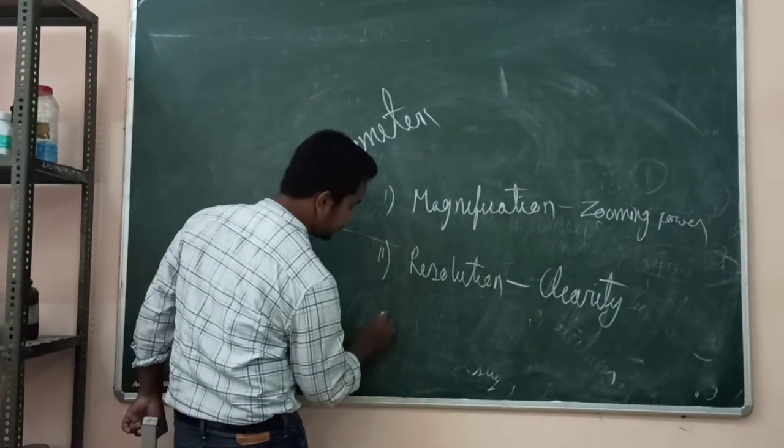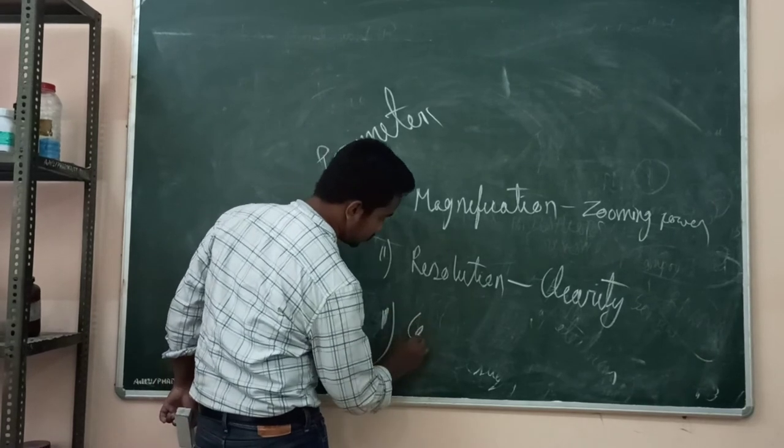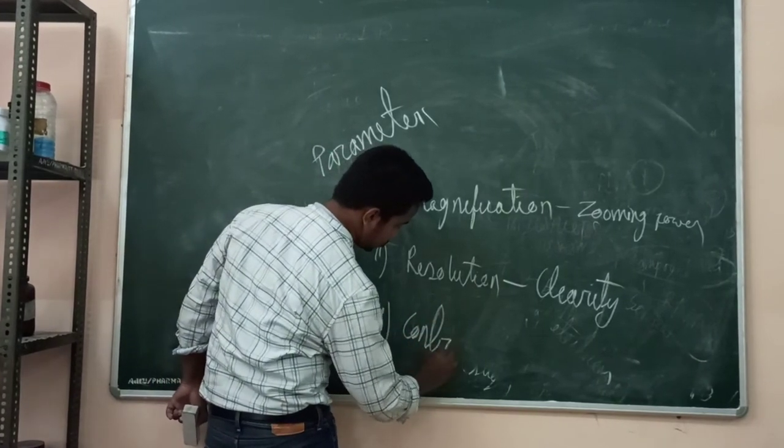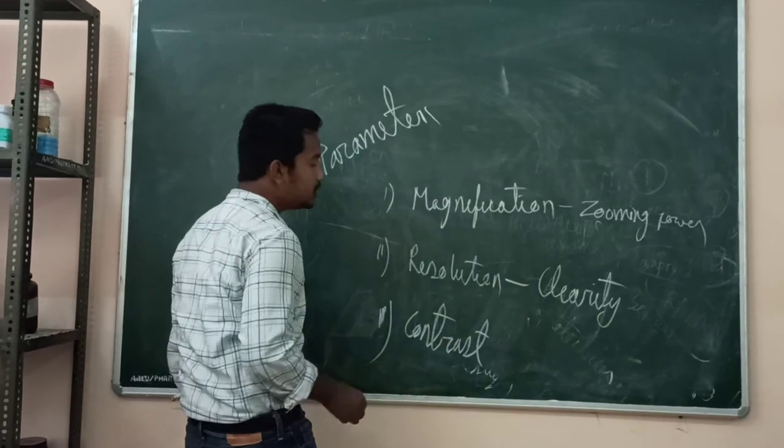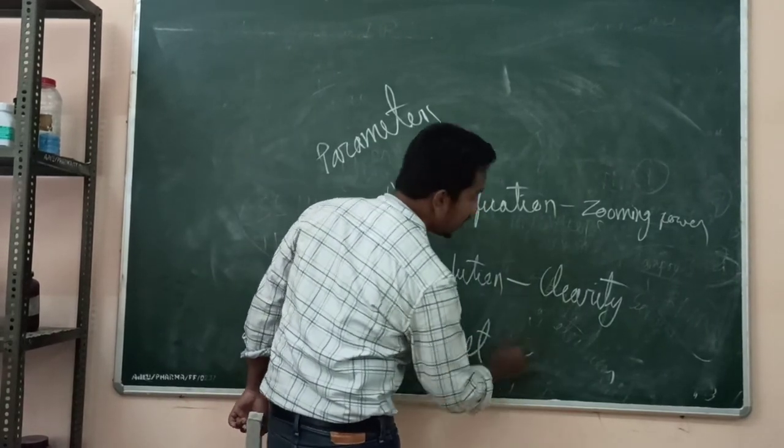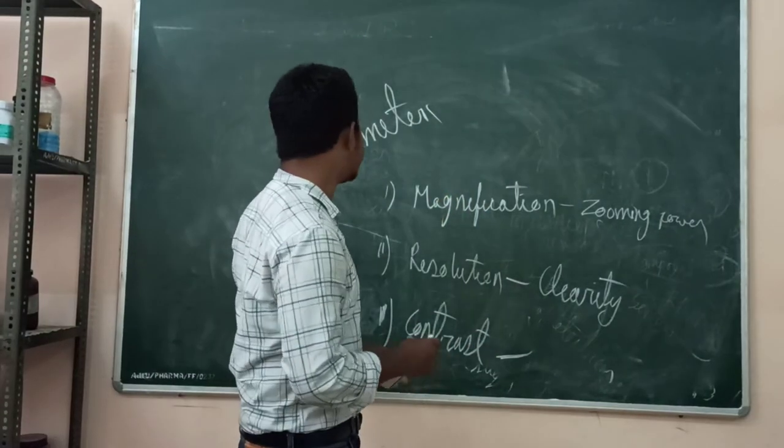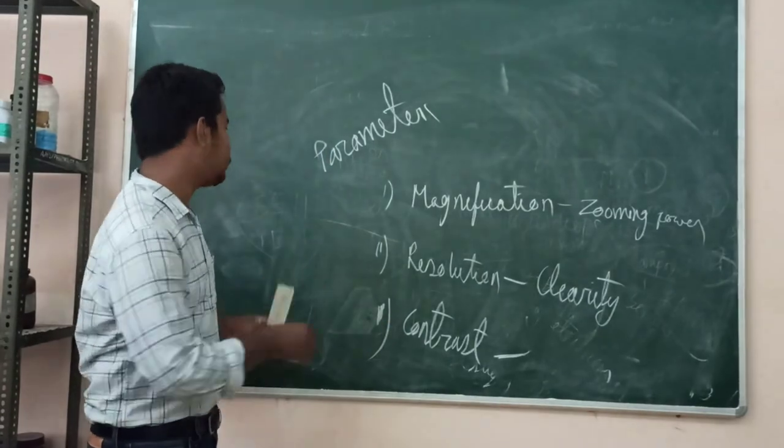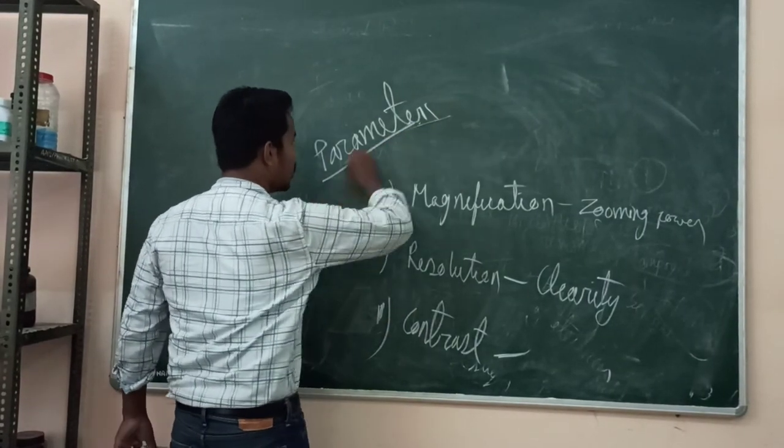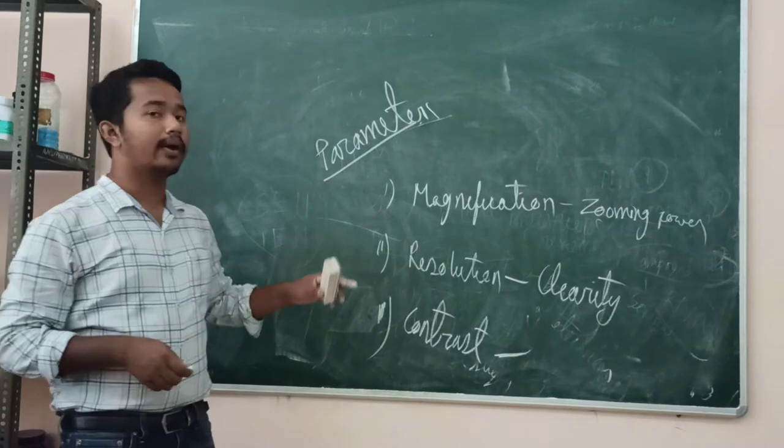Then contrast. Contrast means difference between light and dark. This is the basic parameter for determining the power of the microscope.